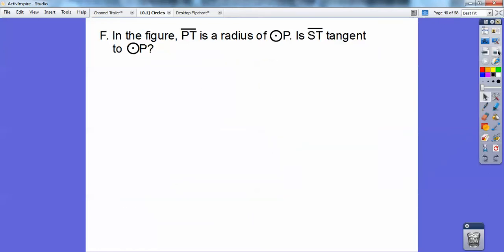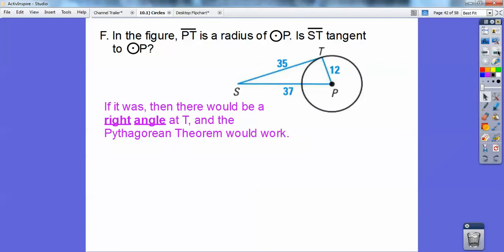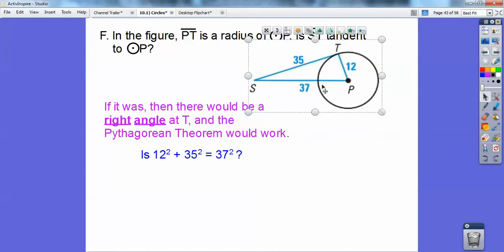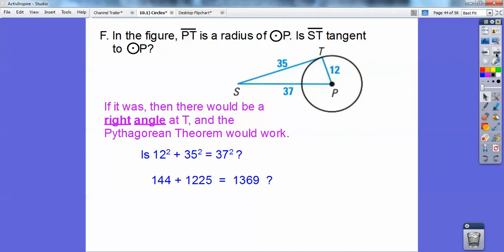So in the figure, segment PT is a radius of circle P, and is ST tangent to circle P? So there's the figure right there. So I want to know, is that a right angle right there? So I want to use the old Pythagorean theorem. If it is a right angle, then your Pythagorean theorem would work out. So is this leg squared plus this leg squared equal to that leg squared? So is 12 squared plus 35 squared equal to 37 squared? And it turns out, yes, it is. So since the Pythagorean theorem works, then that means that's a right angle right there. So it means a tangent to it.